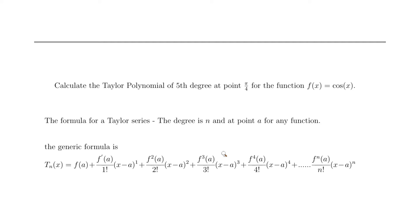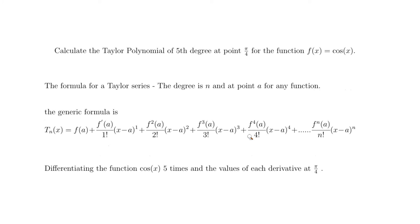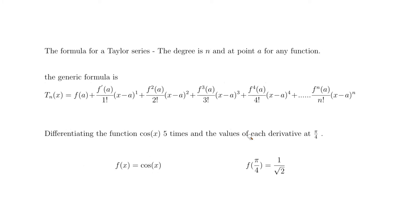Now we're going to start substituting values, one step at a time. In the next stage we substitute a = π/4 everywhere, and then we'll differentiate cosine of x five times and evaluate each derivative at π/4.